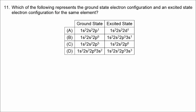Number 11 asks us to find a pair of electron configurations representing the ground state and excited state for the same element. The problem with choice A is that there is no such thing as a 2D orbital. The problem with choice D is that you cannot put 3 electrons into an S orbital, so 3S3 is not allowed. That leaves B and C.